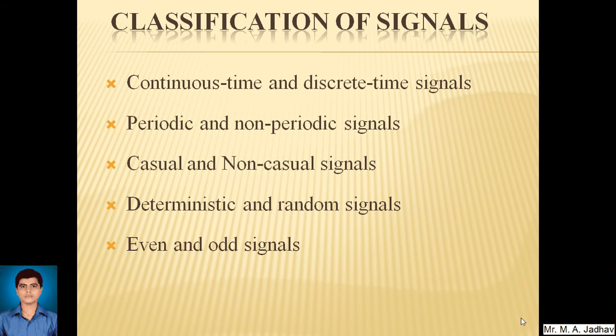Classification of signals: the different types of signals which we are going through are continuous time and discrete time signals, periodic and non-periodic signals, causal and non-causal signals, deterministic and random signals, even and odd signals. So these are different types. Let's go through them one by one.